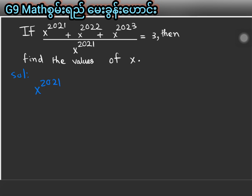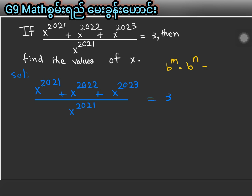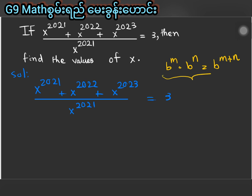x power 2021 plus x power 2022 plus x power 2023, divided by x power 2021, equals 3. We look at this equation.